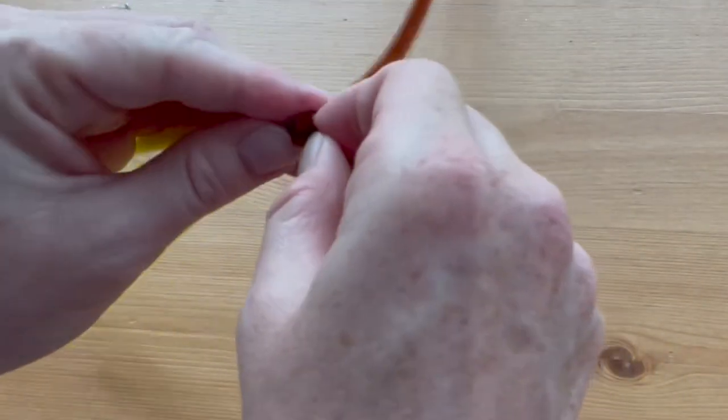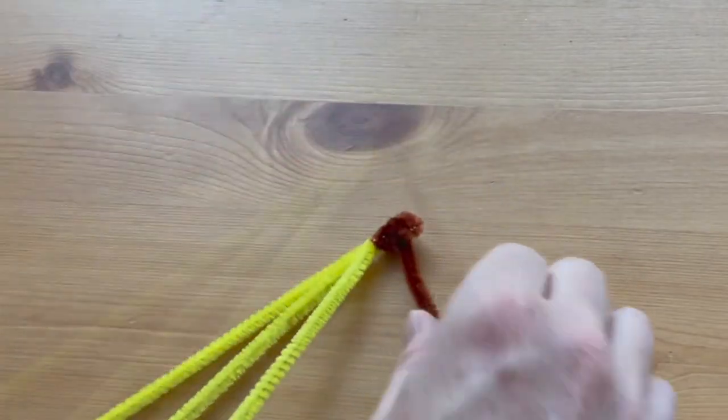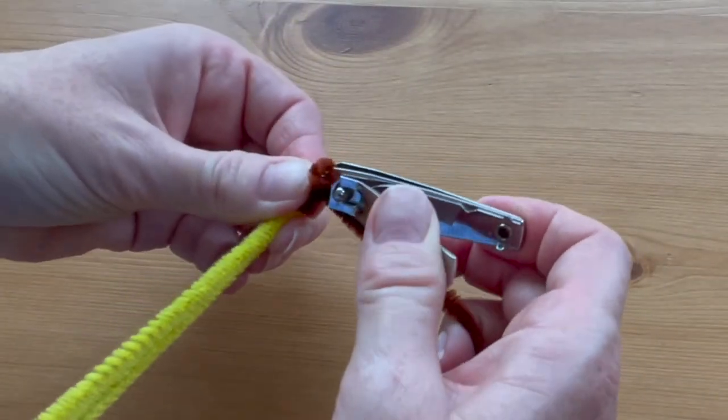Fold a small nub out to one side. Clip the end off with the fingernail clippers.